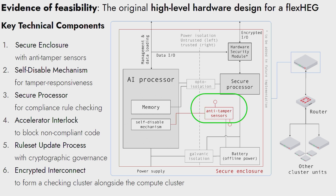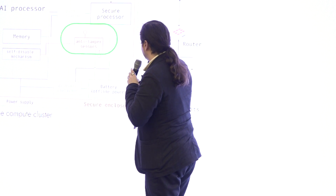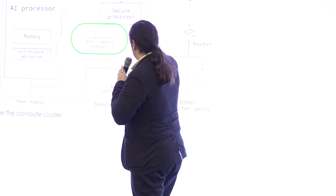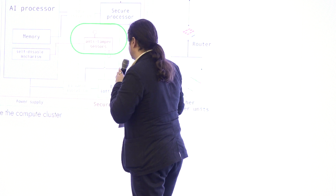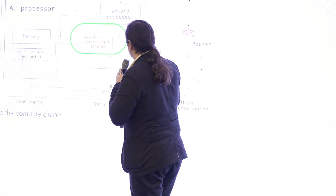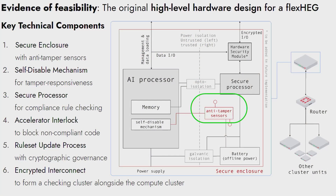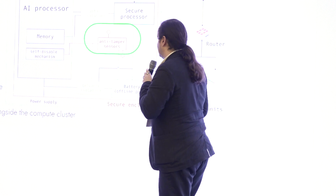You need a coprocessor that actually runs the compliance mechanism — it doesn't need to be on a separate die. In a future processor you'd just have the secure coprocessor on the same die, like the Intel Management Engine, but as an isolated domain that runs the policies and blocks execution of code that hasn't been checked and signed off on by those compliance policies. That secure processor needs a way to receive cryptographically authenticated rule sets from the outside world every 10 minutes, which could be broadcast and data dioded.